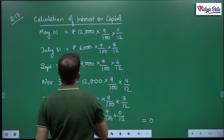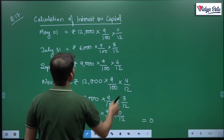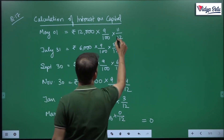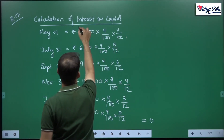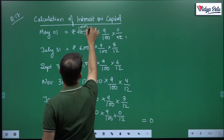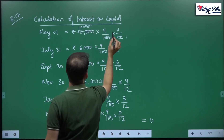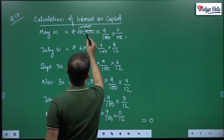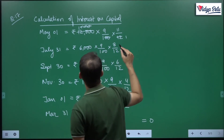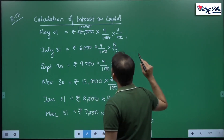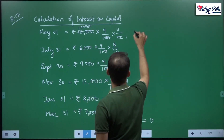Calculating: 12,000 × 9% × 11/12 comes to 990.